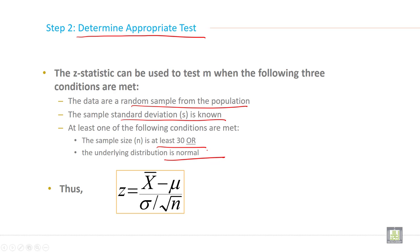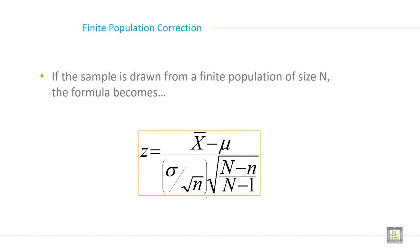So if you have decided Z test, then you can apply this formula: Z equals X bar minus mu divided by sigma over square root of n, to apply Z test in hypothesis testing.